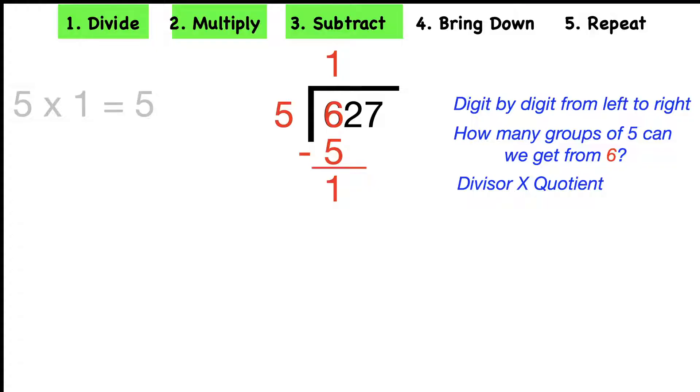Now we subtract. Six minus five is one. Now we're ready to bring down the next digit, which is going to be that two. And that gives us 12. And we're ready now to repeat. We're done with that other part. We're ready to repeat.